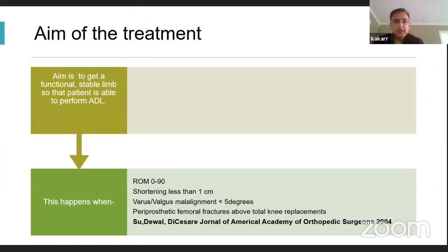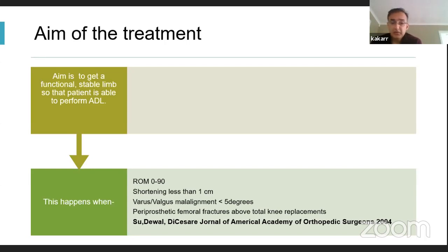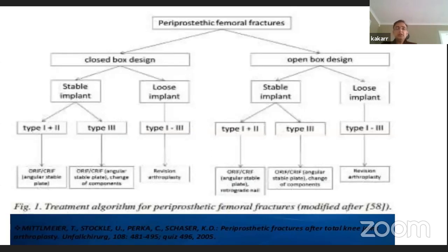The aim of treatment is to achieve a functional stable limb so the patient is able to perform activities of daily living. This is achieved when range of movement is from 0 to 90 degrees — enabling the patient to stand up and sit from a seated position — with shortening of less than 1 centimeter and valgus malalignment of less than 5 degrees for periprosthetic femoral fractures above total knee replacement. This has been published by Su et al in the American Academy of Orthopedic Surgeons.